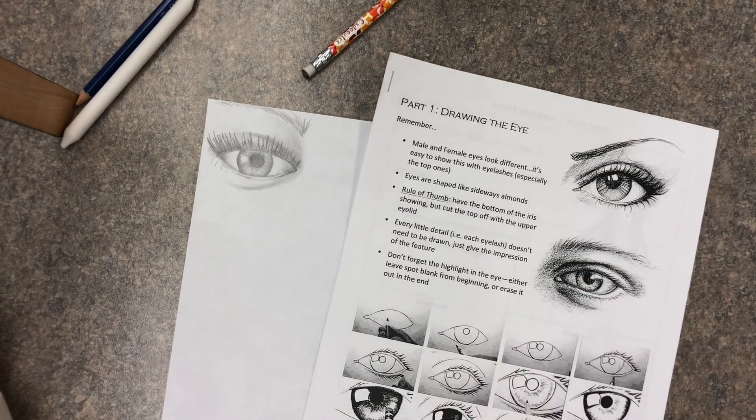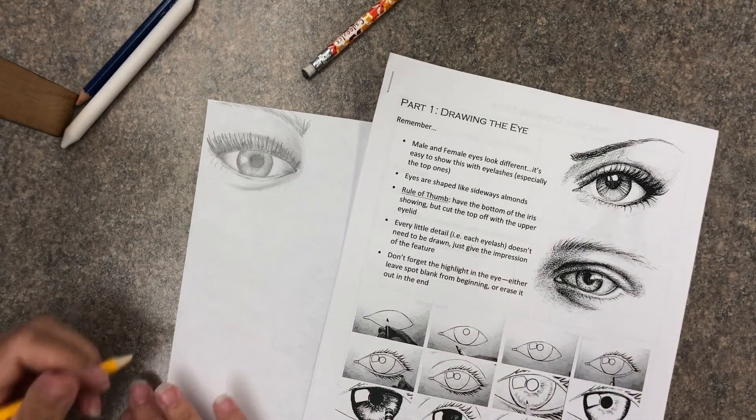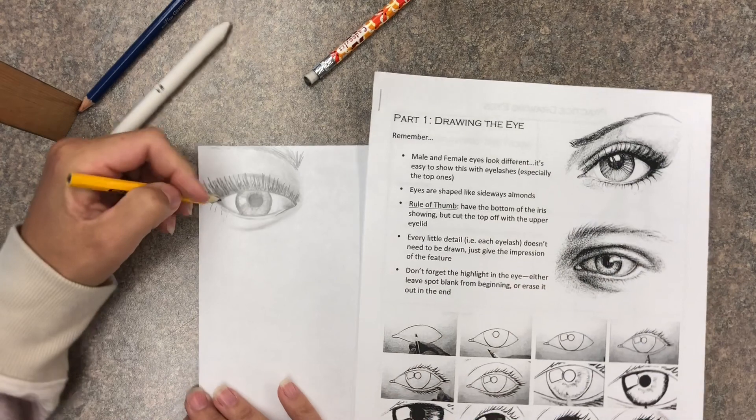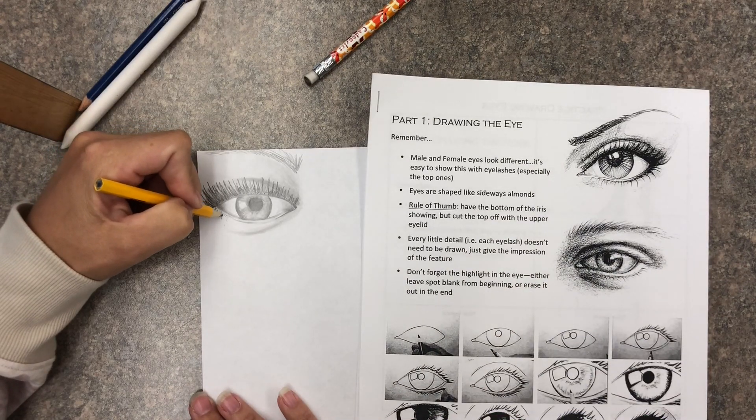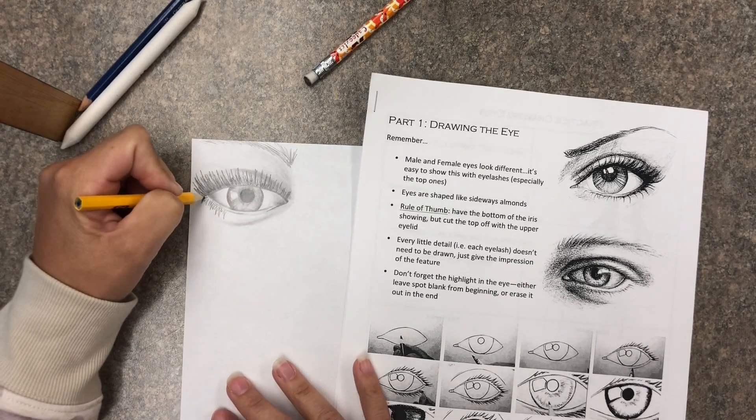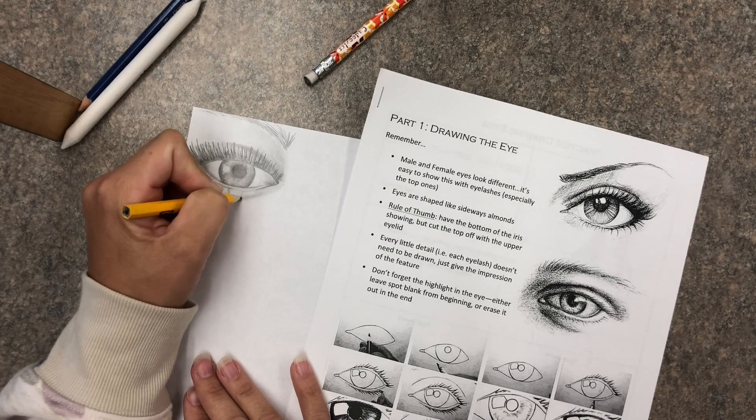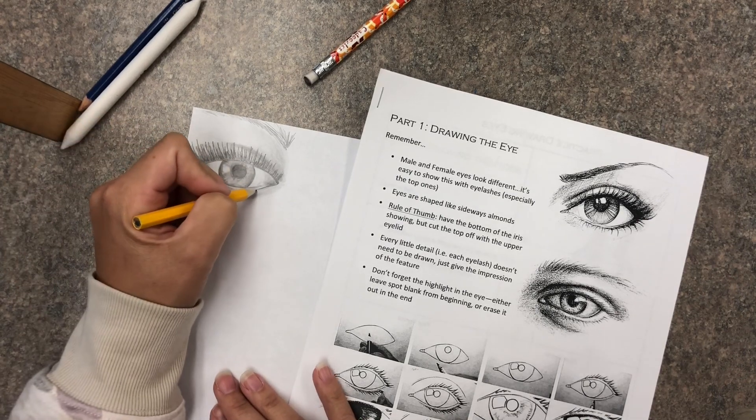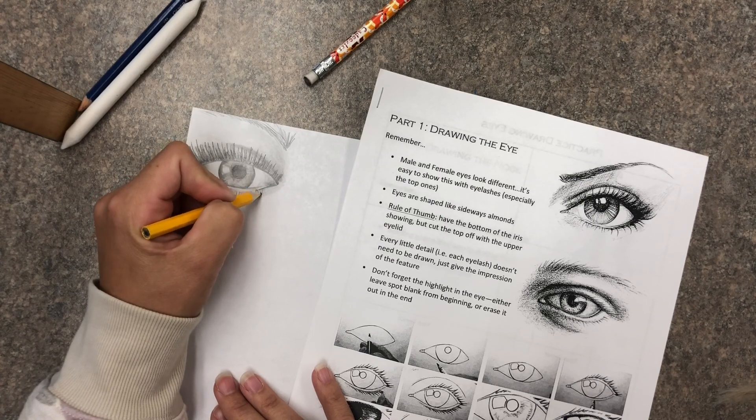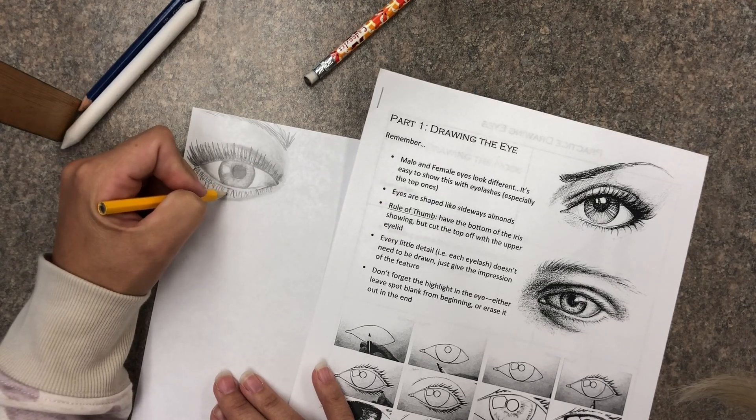You can see I'm not making them all the same shape kind of going different thicknesses. I'm going to do the bottom same thing when I do the bottom eyelashes I kind of do like an upside down V or U and then I can go in add detail.